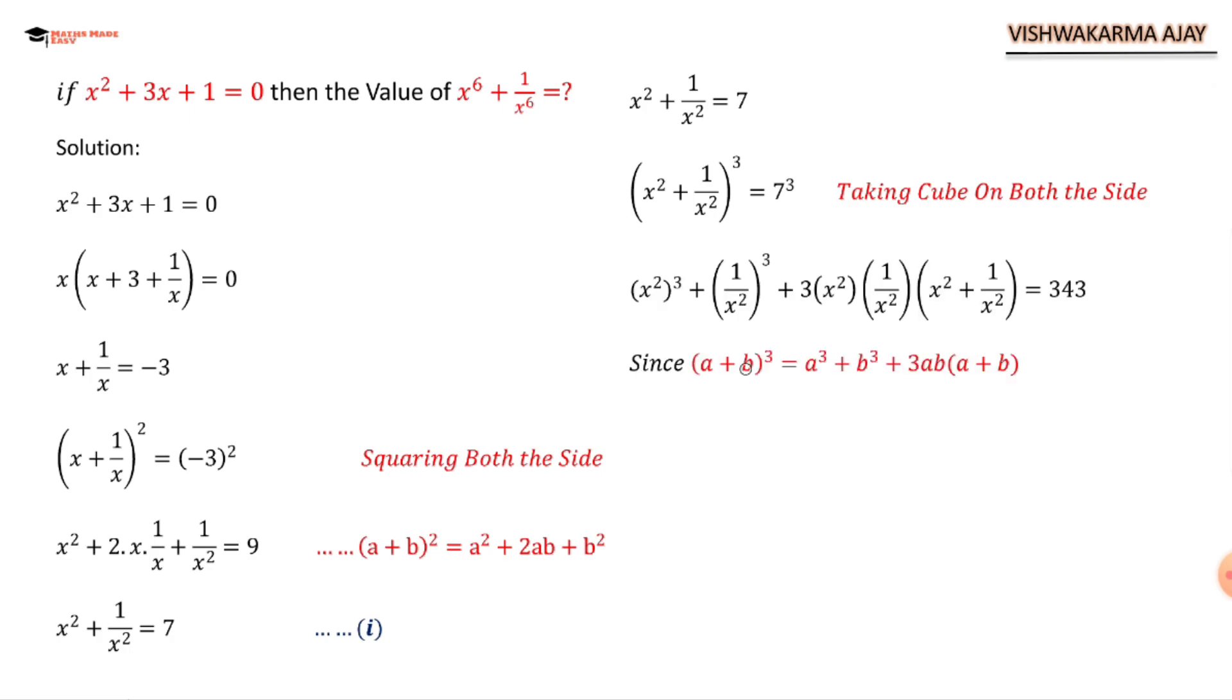Since the formula of (a + b)³ is a³ + b³ + 3ab(a + b), we have substituted the values like this: (x²)³ + (1/x²)³ + 3(x²)(1/x²)(x² + 1/x²). This x² and x² will cancel again like here.